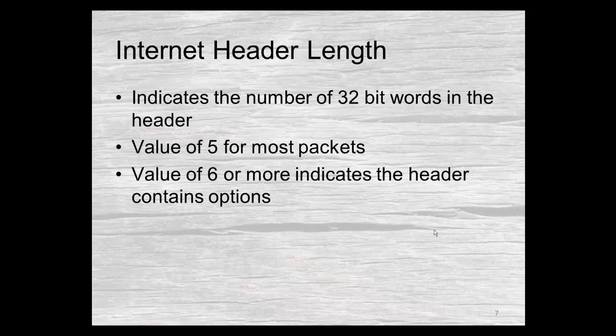The internet header length indicates how many 32-bit words are in the header. Most headers will have a value of 5, meaning the header has 5 words in it. If we have options — and most IP headers do not — then that value would be 6 or more, indicating that options are included in the header.